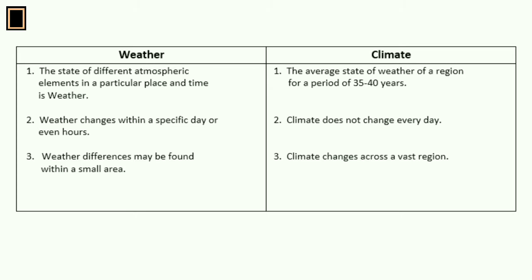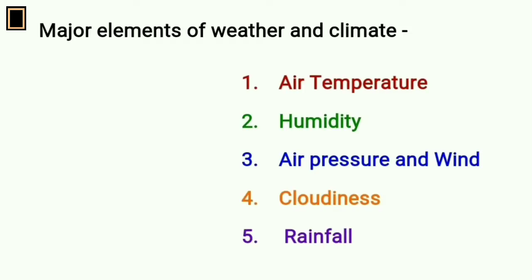Weather differences may be found within a small area. Climate changes across a vast region. Major elements of weather and climate are air temperature, humidity, air pressure and wind, cloudiness and rainfall.